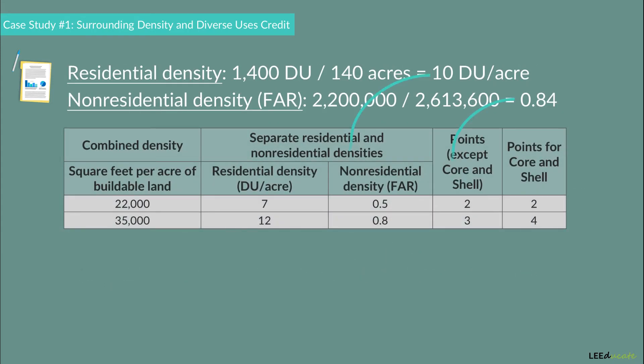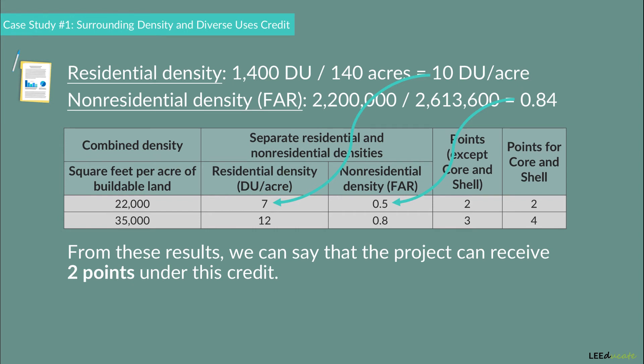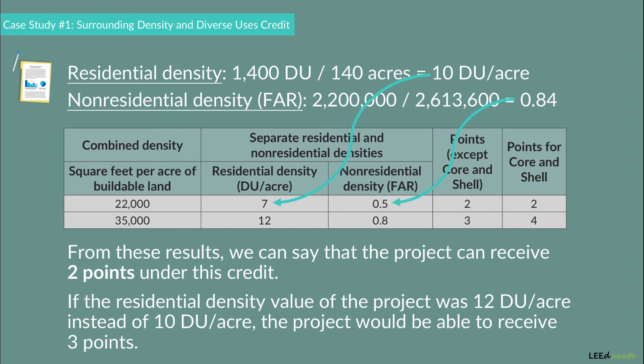From these results, the project can receive 2 points under this credit. If the residential density were 12 DU per acre instead of 10 DU per acre, the project would receive 3 points, since its non-residential density of 0.84 is above the 3-point threshold. But in this situation, since its residential density is below the 3-point threshold, the project can only receive 2 points.